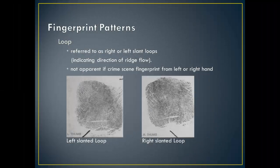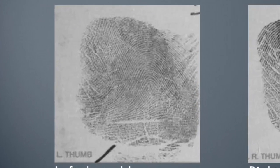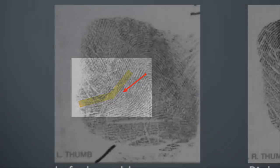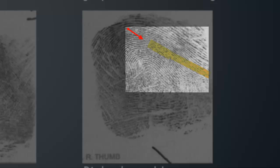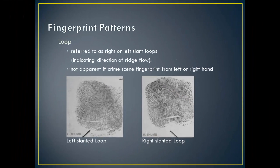There are three classes of fingerprints: loops, whorls, and arches. Loops must have one or more ridges entering from one side of the print, curving, and exiting from that same side. Approximately 60 to 65 percent of the population has loops in their fingerprints. Beyond knowing whether someone has a loop formation, there are also ways of determining whether prints come from the right or left hand, though this is often difficult to determine from prints collected at crime scenes. For instance, a print from someone's left thumb has a left slant, and the right thumb has a right slant. Sometimes prints collected at a crime scene may be partial prints, smudged, or even unreadable. However, when enough detail is collected, the process of identifying characteristics becomes much easier.